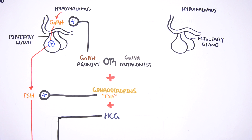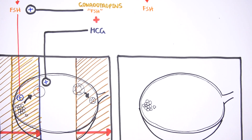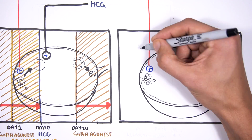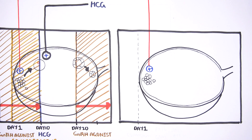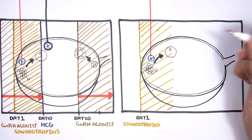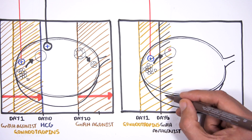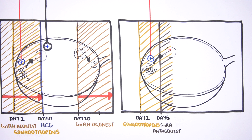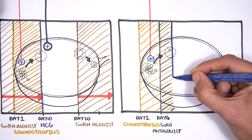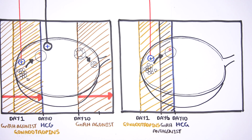Another initial drug that can be used for controlled ovarian stimulation is gonadotropin-releasing hormone antagonists. The hypothalamus produces gonadotropin-releasing hormone, which stimulates the pituitary to release follicle-stimulating hormone, which in turn stimulates follicle development from the ovaries. In this method, at day 1 you start gonadotropins to stimulate follicular development. At day 6, GnRH antagonists are introduced to prevent spontaneous follicle rupture due to the LH surge and to promote follicle development. When ultrasound monitoring indicates that the eggs are mature, human chorionic gonadotropin is injected to induce final follicle development and ovulation at about day 10.